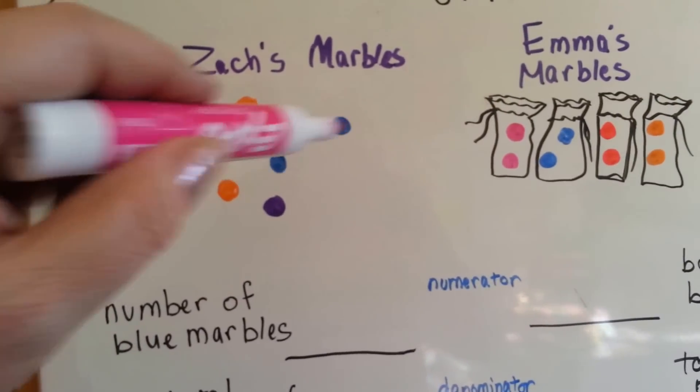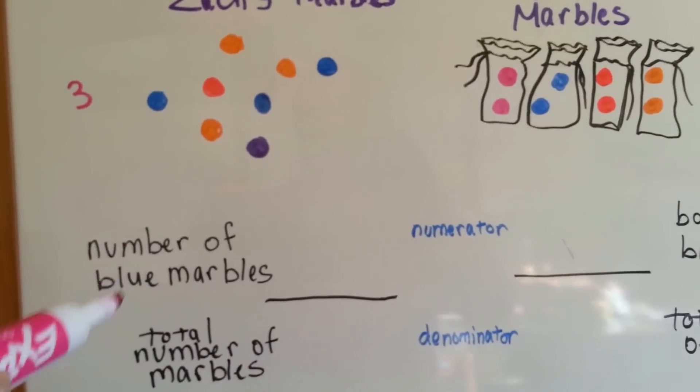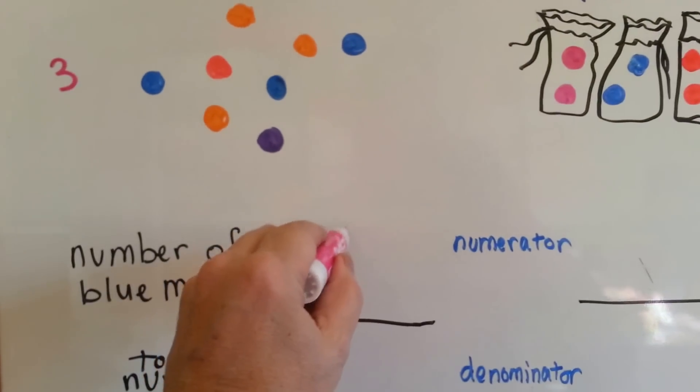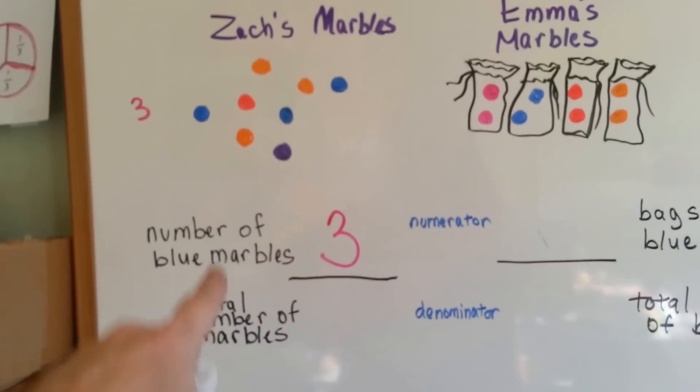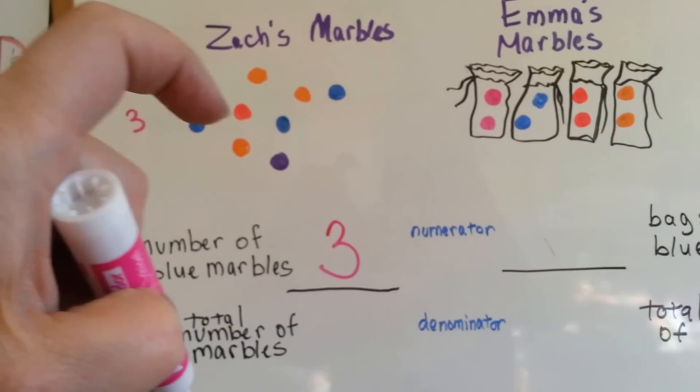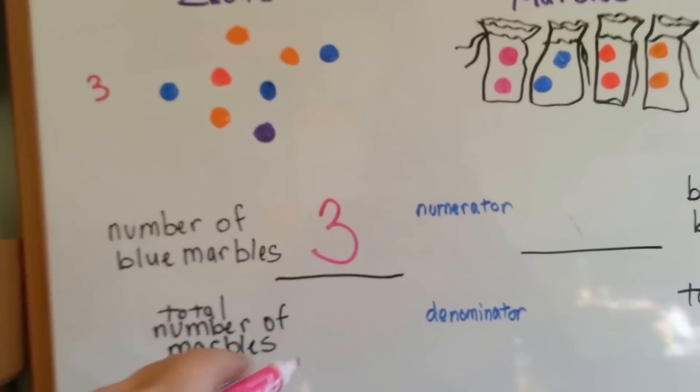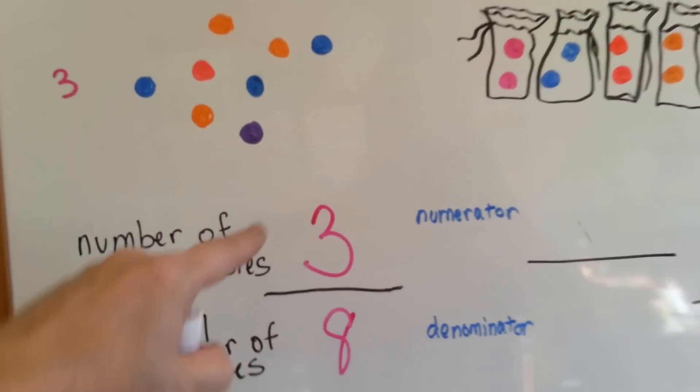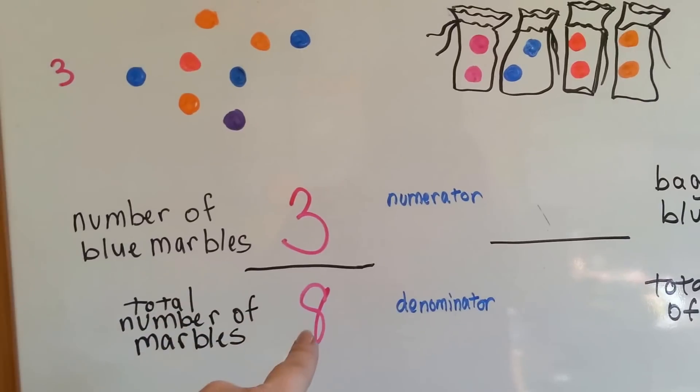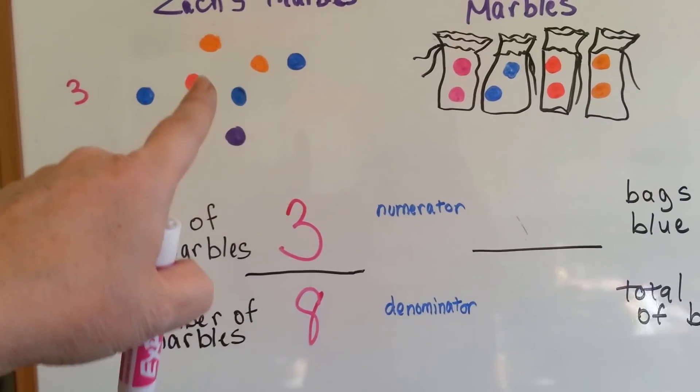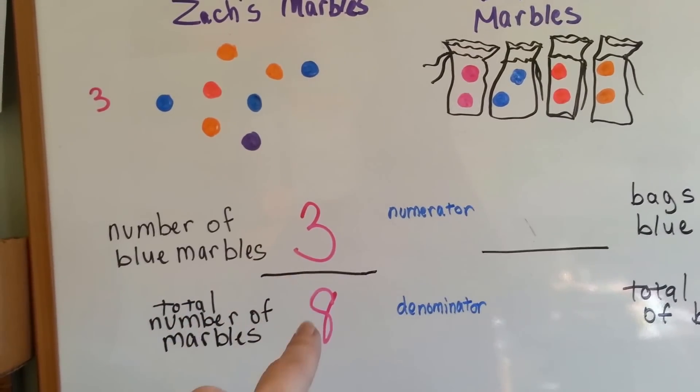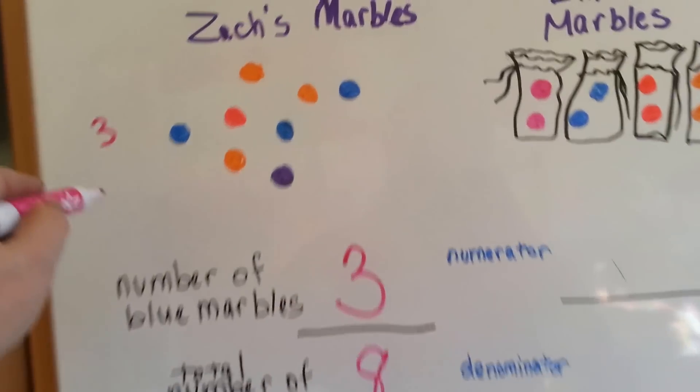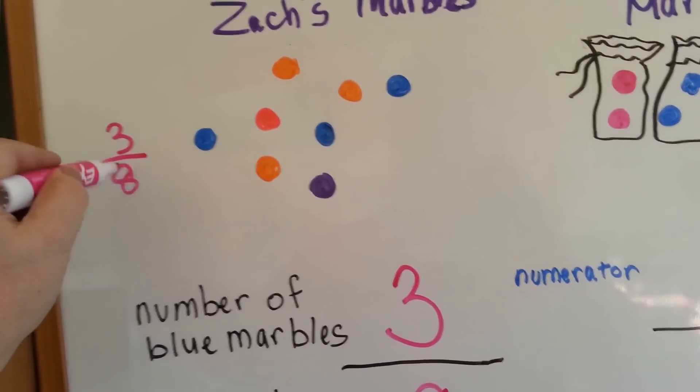So Zach's got three blue marbles. Number of blue marbles, three. Total number of marbles is one, two, three, four, five, six, seven, eight. The top is the numerator, the bottom is the denominator. So Zach's, three eighths of his marbles are blue. Three eighths are blue.